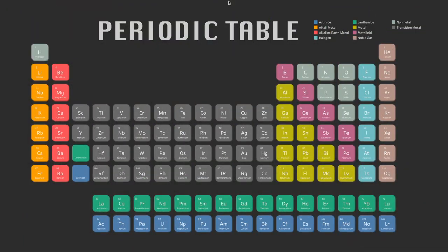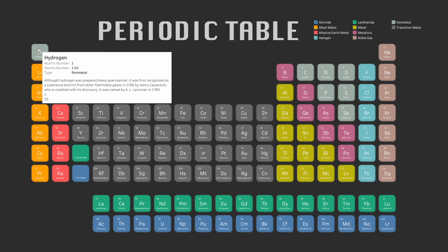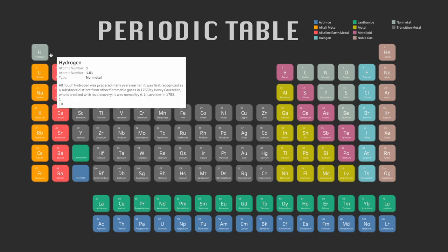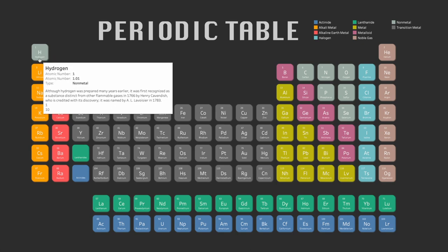In today's tutorial we are gonna learn about how to create a periodic table in Tableau. A periodic table is also known as the table of elements, where all the chemical elements are arranged in rows called periods and columns called groups, and they are also arranged in increasing order of atomic numbers. We have all these elements from hydrogen, helium, lithium, beryllium and so on, with their atomic number at the top left corner, the symbol in the middle, and the name at the bottom.